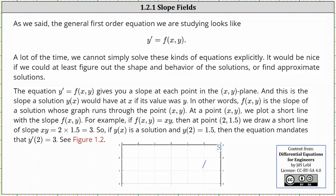The equation y prime equals f of x comma y gives us a slope at each point in the xy plane. This is the slope that a solution y of x would have at x if its value was y. In other words, f of x comma y is the slope of a solution whose graph runs through the point x comma y. At a point x comma y, we plot a short line segment with the slope f of x comma y.